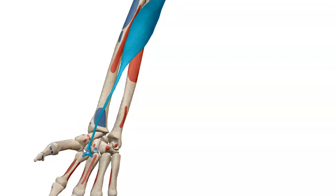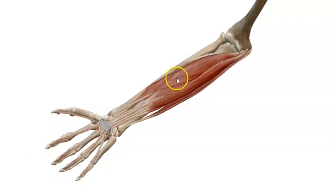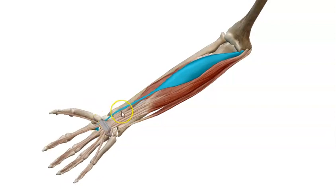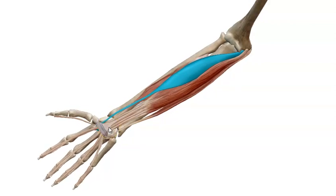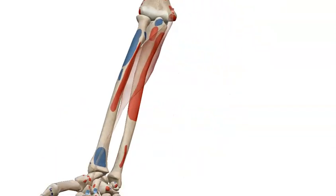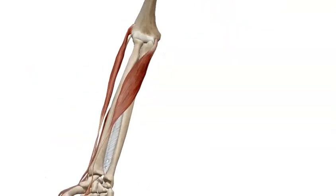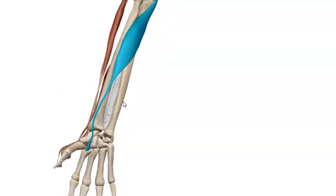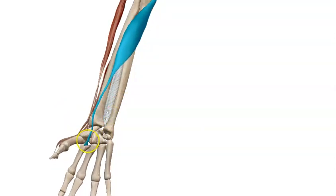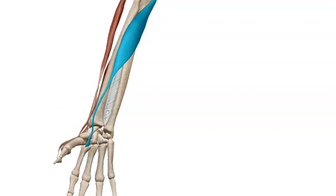Looking at the first movement: flexor carpi radialis is one of the muscles that performs flexion of the wrist, as you can see. The second action is abduction of the hand — it makes radial deviation of the hand, which is called abduction. As you see, it takes the hand outward, which is called radial deviation or abduction of the hand.